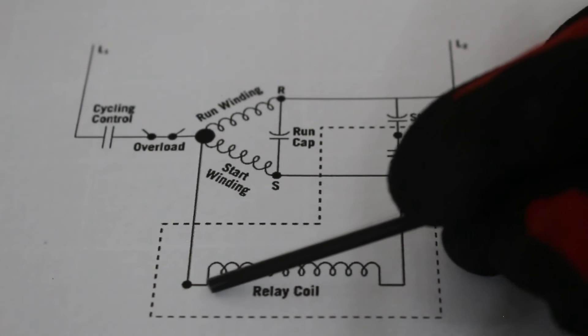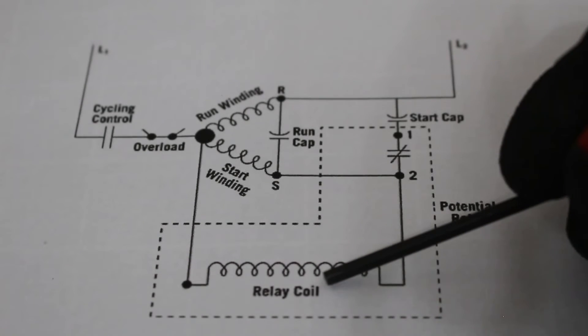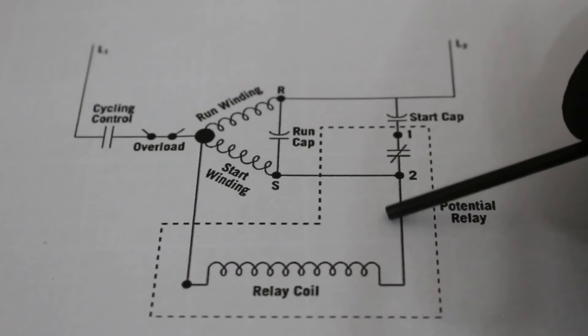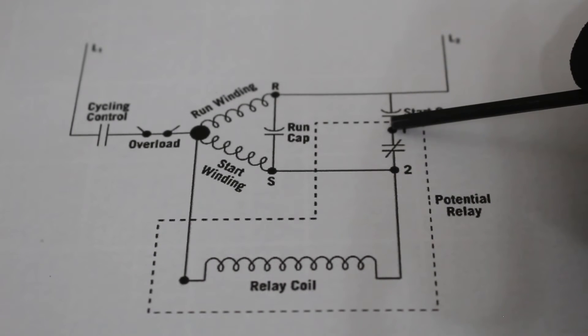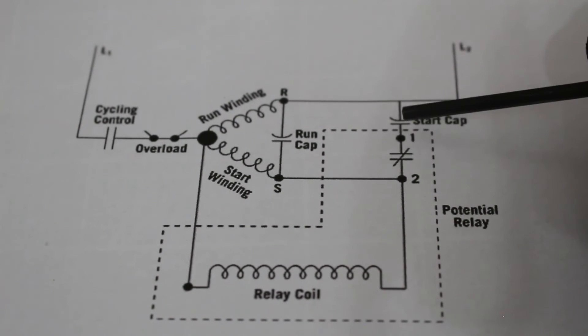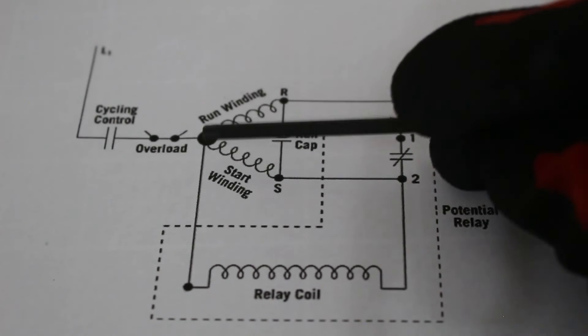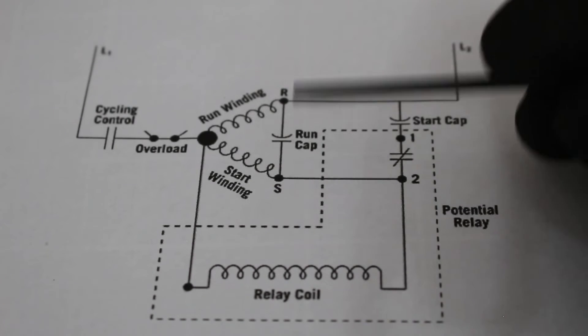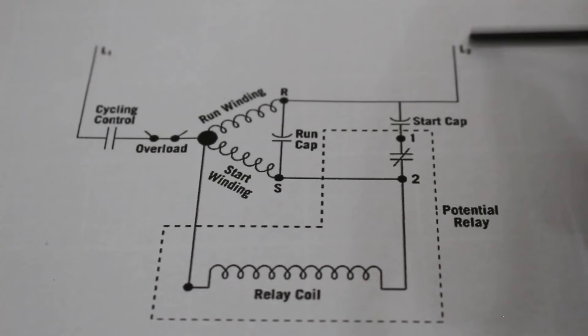So, what's going to happen is that electricity is going to flow through this coil. And it's going to pass through here. And that is going to energize our start cap. We're going to have power going through our windings, through the run cap, and the start cap, and it's going to complete the circuit through L2.